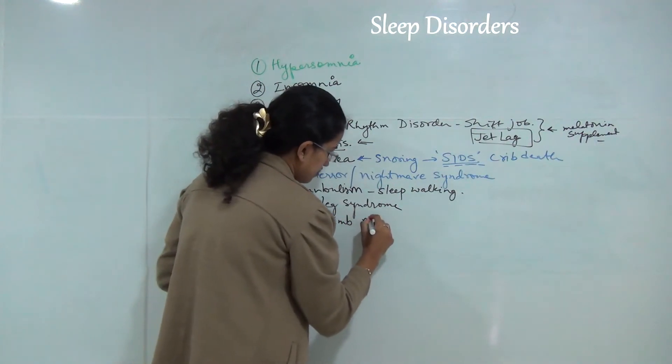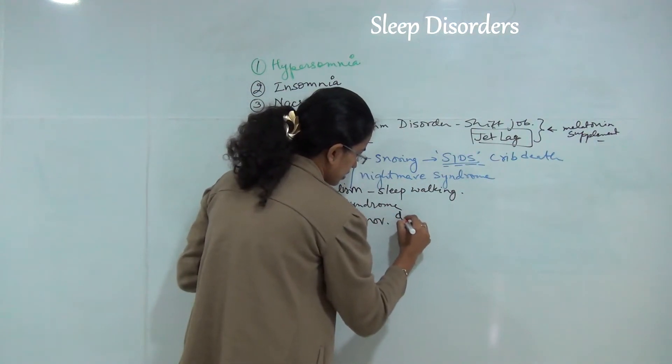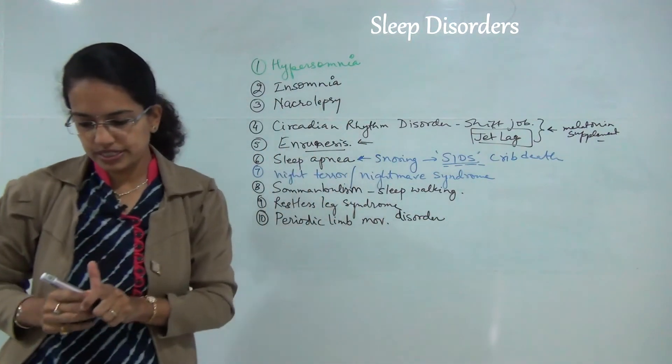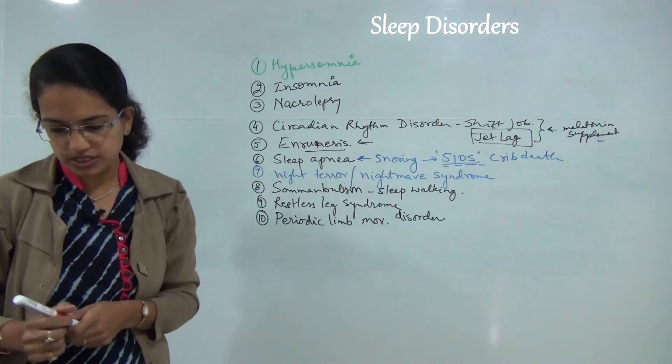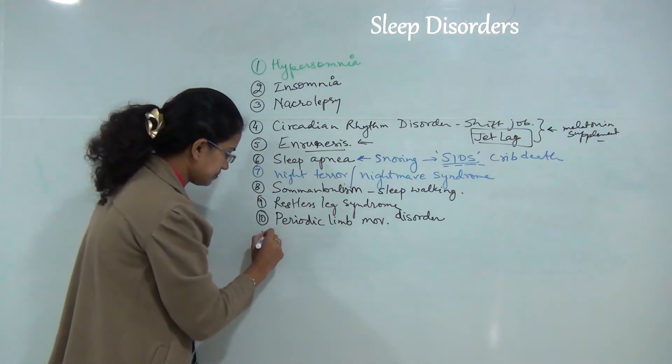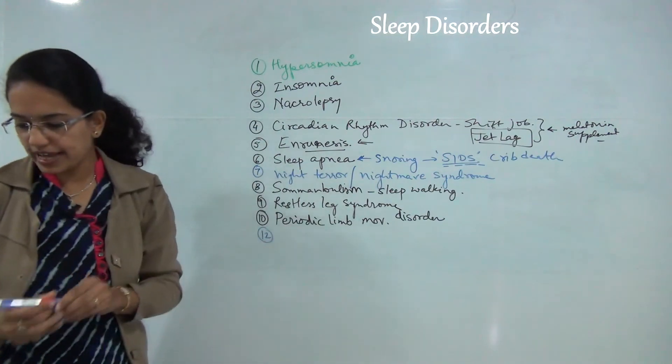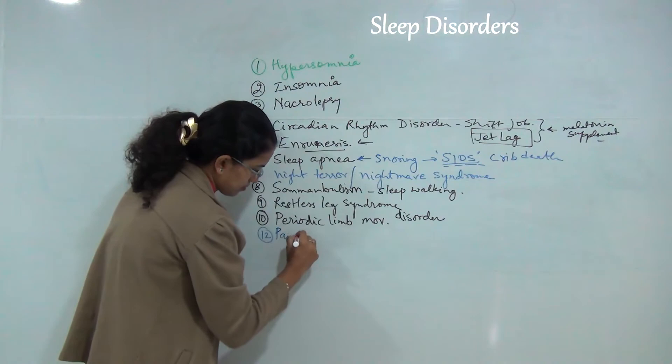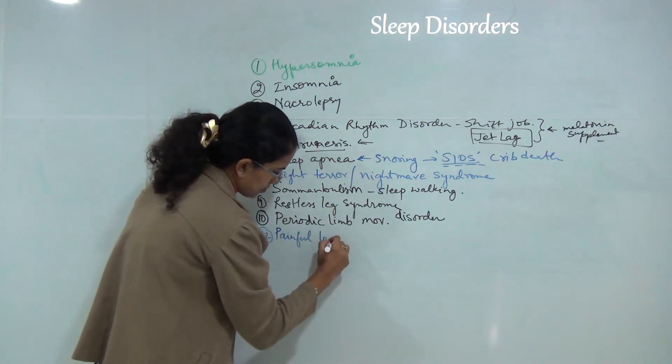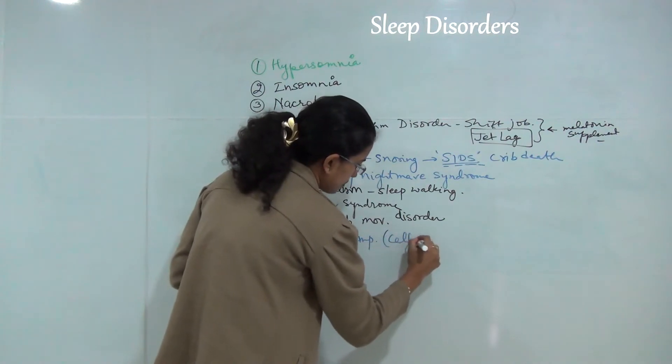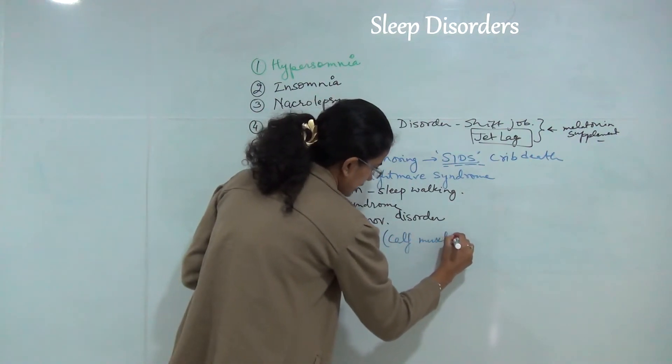Periodic limb movement disorder has small muscle twitches that appear. Next is painful leg cramps. A person has severe leg pain, usually of the calf muscles, during nighttime.